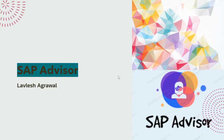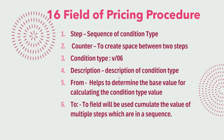Hello all, I hope all of you are doing good. Let's continue on today's topic. Our today's topic is the 16 fields of pricing procedure. Pricing procedure, also called the condition technique, consists of five different steps. Whenever we are defining the pricing procedure, these 16 fields come into the picture. We'll get to know each one in detail.